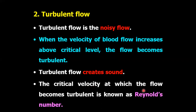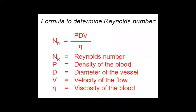The critical velocity at which the flow becomes turbulent is known as Reynolds number. This is the formula to determine Reynolds number: Reynolds number equals ρ (density of blood) multiplied by d (diameter of the vessels) multiplied by v (velocity of the flow), divided by η (viscosity of the blood). That means if the density and velocity of the blood flow is increased, then blood flow is increased.